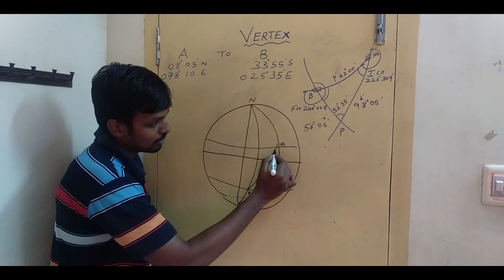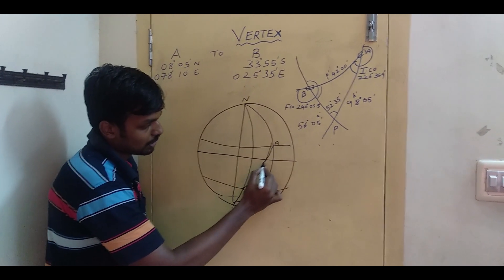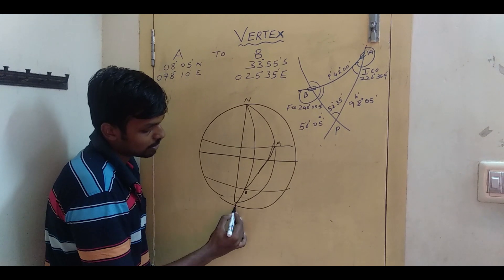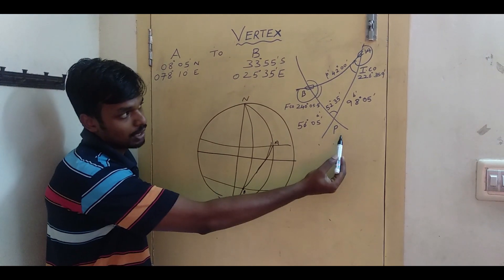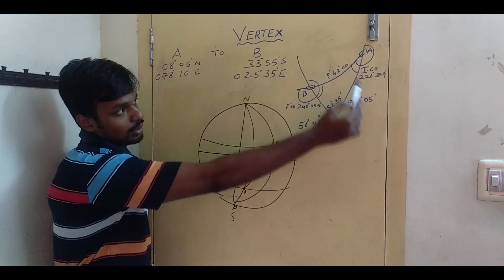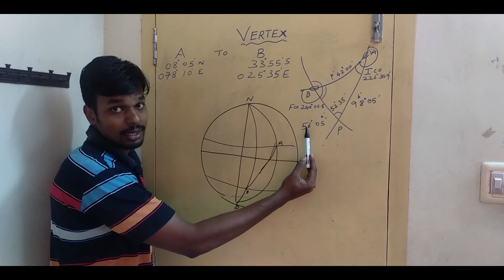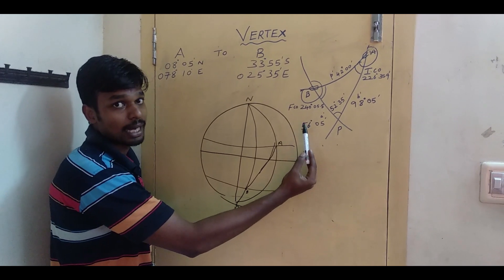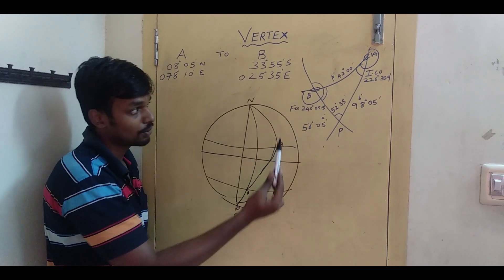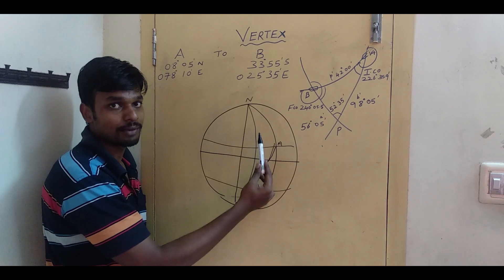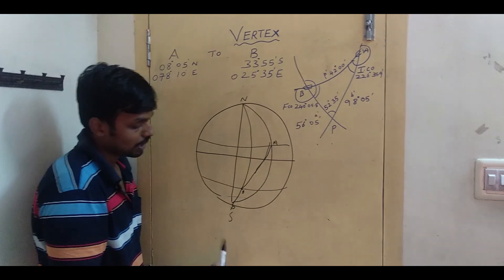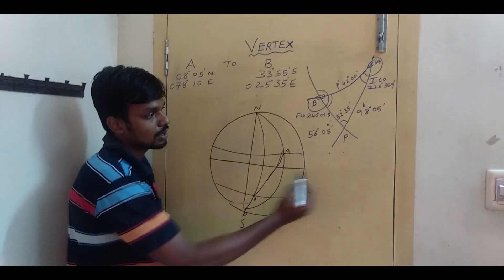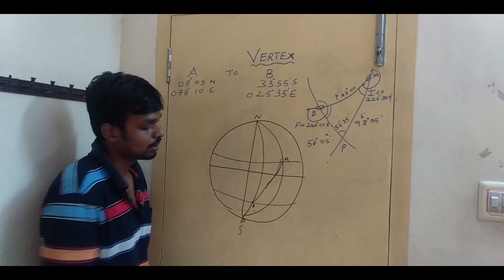This is my vertex. This is the PZX triangle — this is the pole. The initial course and final course have already been found by the great circle formula using the haversine method, which I've explained in another video.